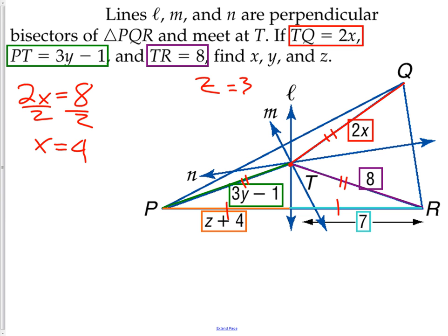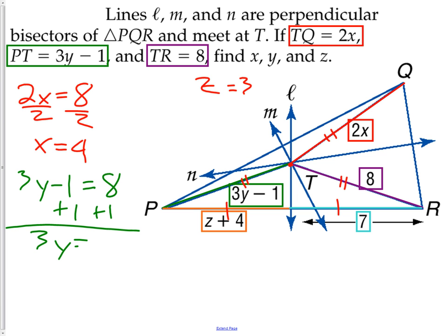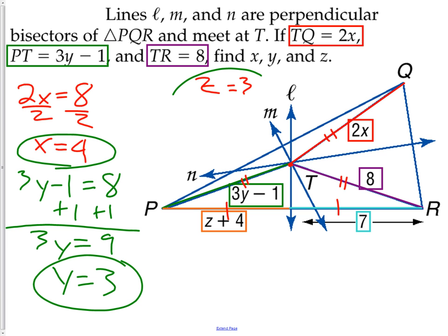We can also set the green segment equal to the purple segment to solve for y. We now have y, x, and z — the lengths of all three segments. If you have any questions on any part of today's lesson, make sure to note that and ask me questions when you get back to class. See ya!